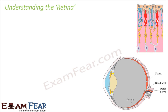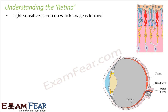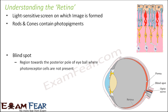The retina functions like a light-sensitive screen, and it is light-sensitive due to the presence of rods and cones. On this screen, an image is formed — just like normal image formation with a lens. You have a lens, an object (the things we are seeing), and a screen where the image is formed. That screen is the retina, and the photo pigments in rods and cones enable image formation.